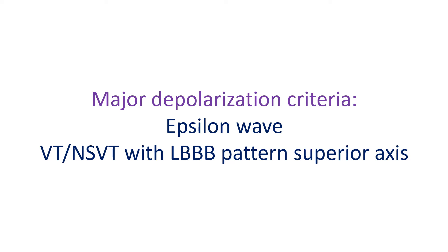Residual myocytes of 60 to 75% constitute a minor criterion. Major repolarization criterion is the presence of inverted T waves in right precordial leads V1 to V3 or beyond in individuals more than 14 years of age in the absence of complete right bundle branch block. Inverted T waves in the presence of RBBB, or in V1 and V2, or in V4 to V6, are minor criteria. Epsilon wave between the end of QRS complex and onset of T wave in leads V1 to V3 is a major depolarization criterion. Minor criteria are based on signal-averaged ECG parameters indicating post-excitation.